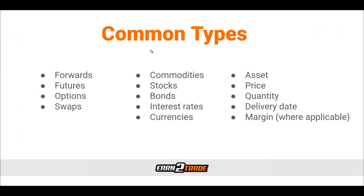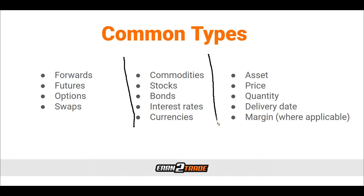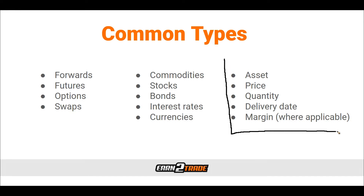When understanding derivatives, it can be helpful to look at them on two different levels: first, the type of derivatives, and then the assets on which these derivatives are based. The most common types of derivatives are forwards, futures, options, and swaps. The most common underlying assets include commodities, stocks, bonds, interest rates, and currencies. While you can trade derivatives on an array of different assets, each derivative will have common factors including asset, price, quantity, delivery date, and margin. Some derivatives are traded in isolation and others as bundles, but the core information is still the same.